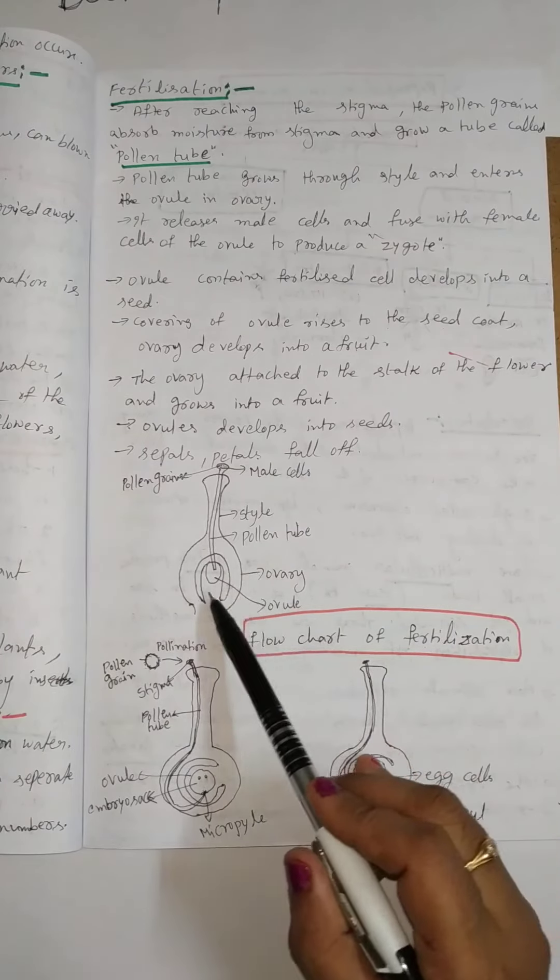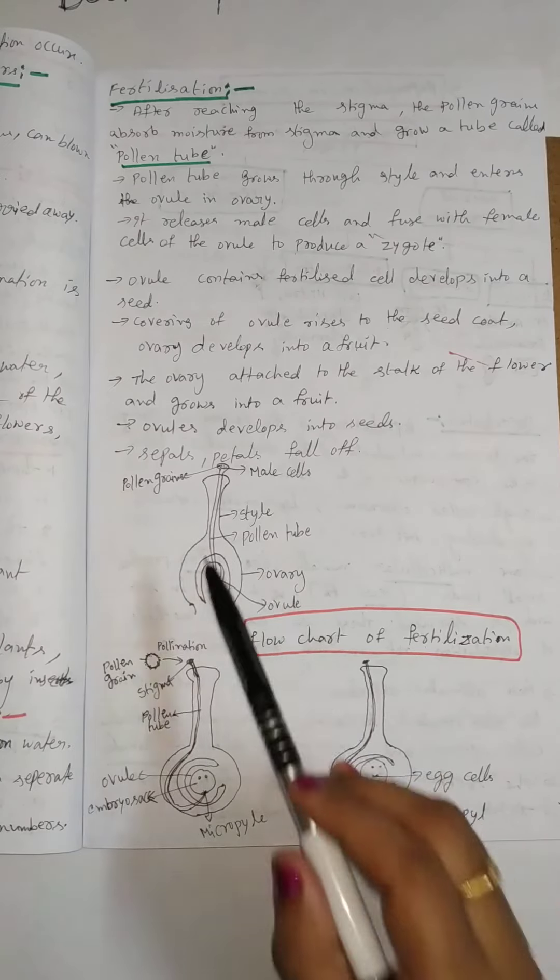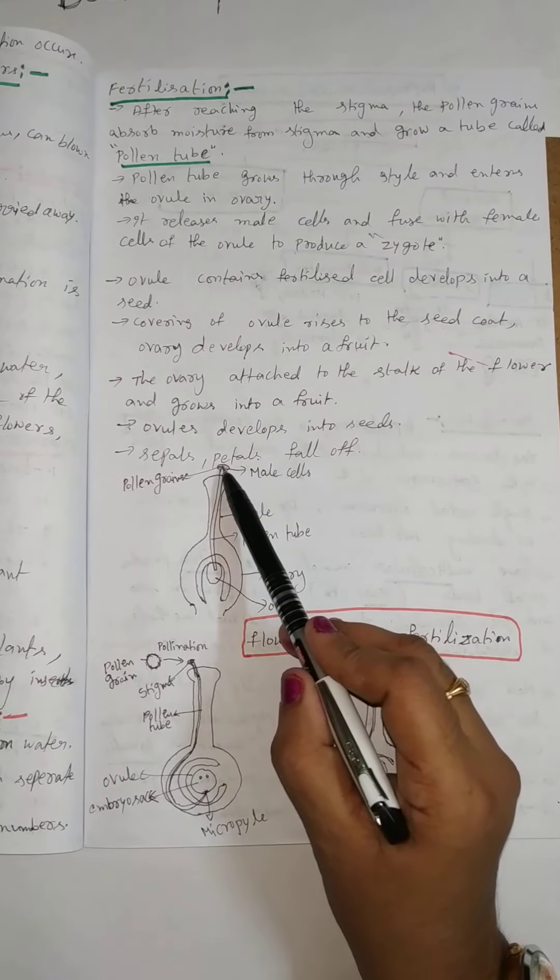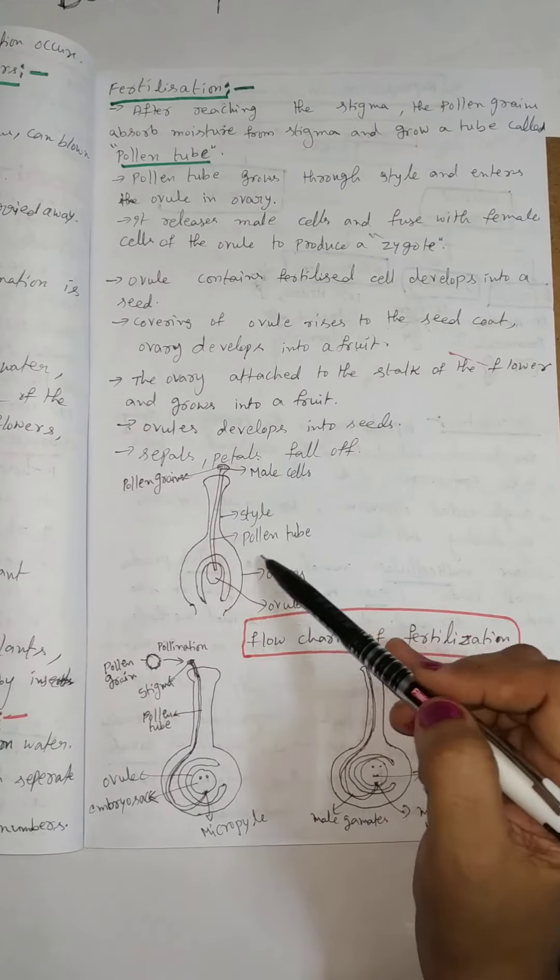Here is the neat diagram. This is the ovary. This is the ovule. This is the style. This is the stigma. Here is the pollen grain. And it forms a tube-like structure. It is the pollen tube.